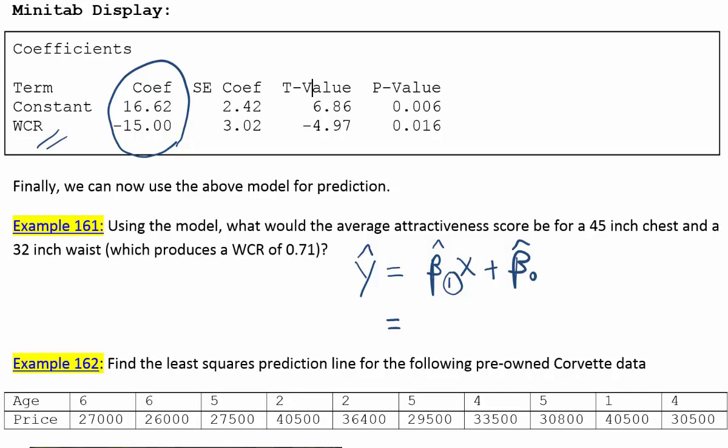So in this case, it's WCR, or waist-to-chest ratio. Remember, we're going to be plugging in a waist-to-chest ratio into x and trying to predict a corresponding y.